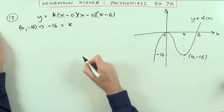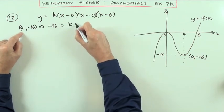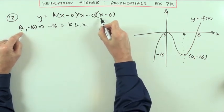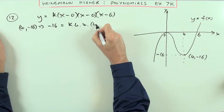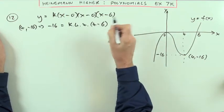Negative 16 is k times, and if x is 4, it's going to be times 4, times 4, and then I'll put it in, 4 minus 6, which is negative 2.